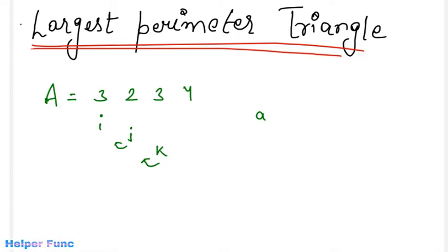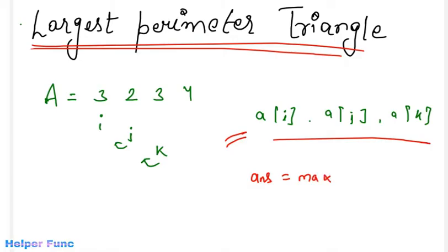And now we have our three sides as A[I], A[J], and A[K]. Now first we will check if the condition of the triangle is satisfied or not, that is if sum of any two sides is greater than the third one or not. And if this is satisfied, then we will update our answer. Answer equals max of answer or the perimeter formed by these three sides. But this approach requires order of n cubed time complexity as we are using three for loops.